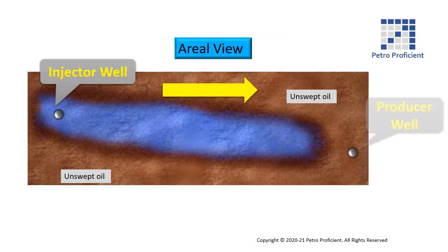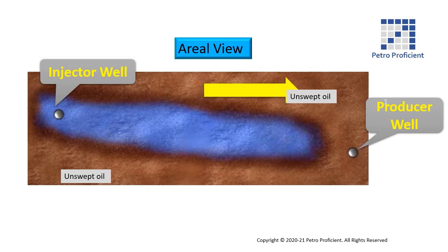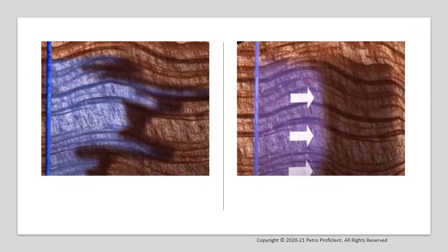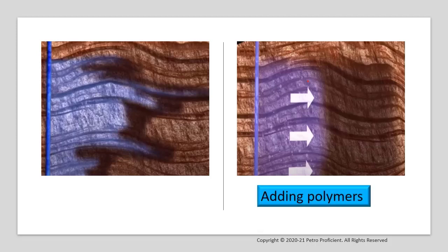From the aerial view, it can be seen that the traditional water flood narrows its course, bypassing a large amount of unswept oil in the displacement zone. This reduces the aerial sweep efficiency. Water used for water flooding can be modified to improve the sweep of the oil in the displacement process by adding polymers, which improves the water flood sweep and displaces more oil than conventional water flooding.